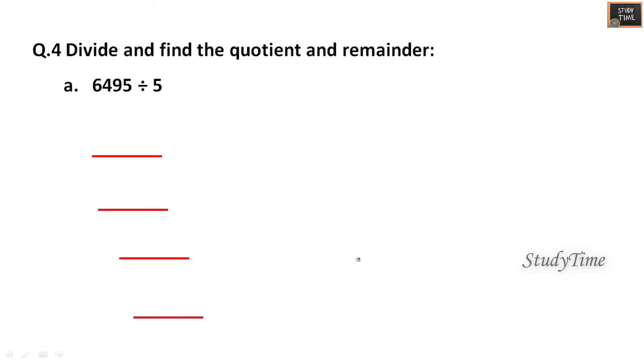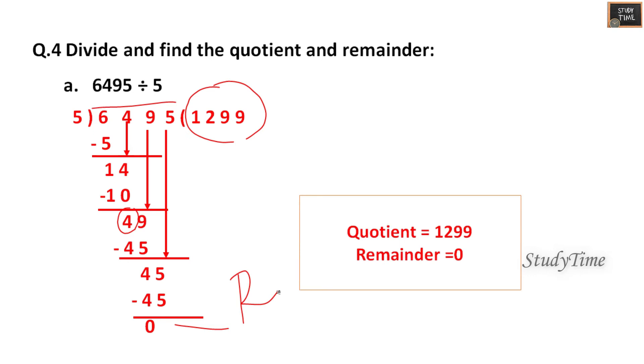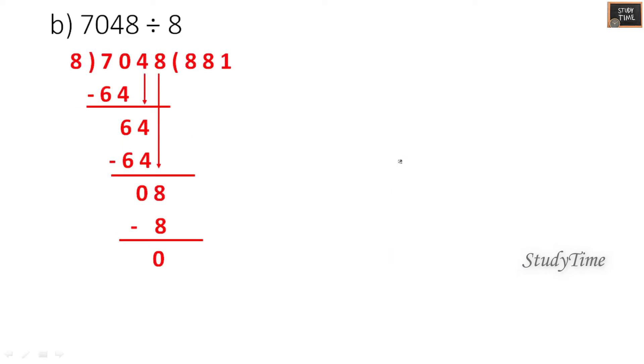Next division: 6495 divided by 5. You have to divide first, take the first number, 5 ones are 5, subtract, then you have to bring the 4. Then 5 twos are 10, the answer would be 4. You have to drop 9 here, 5 nines are 45. Again you have to drop 5 here, 5 nines are 45. So you will be getting the quotient as 1299, remainder is 0. Always you have to write like this: quotient and remainder you have to write to get full marks.